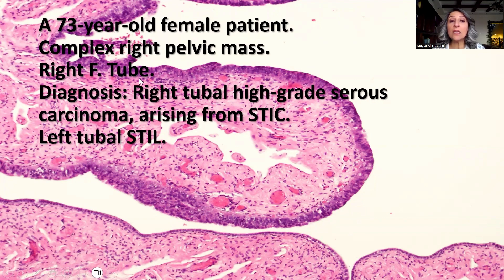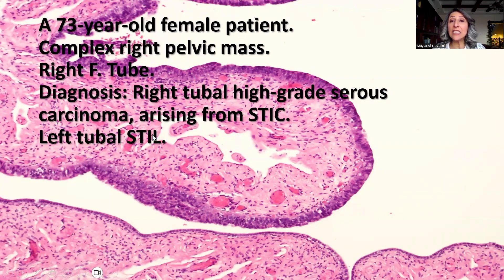The final diagnosis in this case is right tubal high-grade serous carcinoma arising from serous tubal intraepithelial carcinoma. On the right side, while the left Fallopian tube shows only STIL — serous tubal intraepithelial lesion.